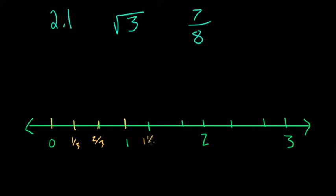Then we have one and one-third, one and two-thirds, and then two. Then we keep going: two and a third, and two and two-thirds.